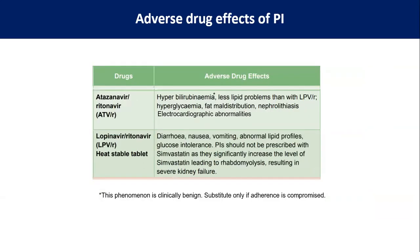Atazanavir/ritonavir causes unconjugated hyperbilirubinemia, which does not require a change of molecule — we need to simply reassure the patient. Atazanavir/ritonavir produces comparatively less lipid abnormalities compared to lopinavir/ritonavir, and there can be hyperglycemia, fat maldistribution, nephrolithiasis, and electrocardiographic abnormalities. Lopinavir/ritonavir can produce diarrhea, nausea, vomiting, and abnormal lipid profile. PIs should not be prescribed with simvastatin as they significantly increase simvastatin levels, leading to rhabdomyolysis and kidney failure.